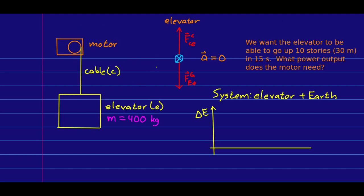Let's look at an example with power. So suppose we have an elevator, which with a few people in it is 400 kilograms, and it's being raised by a cable, which is on a motor. And we want the elevator to be able to go up 10 stories, which would be about 30 meters, in 15 seconds. What power output do we need the motor to have?